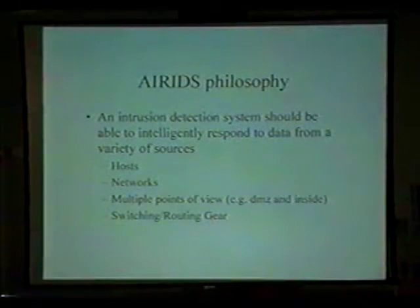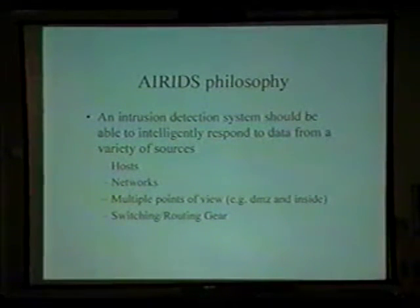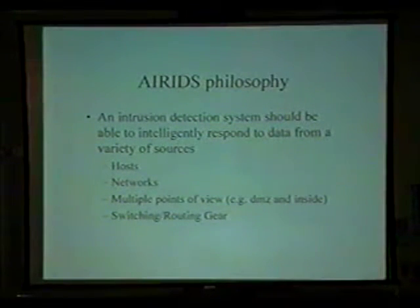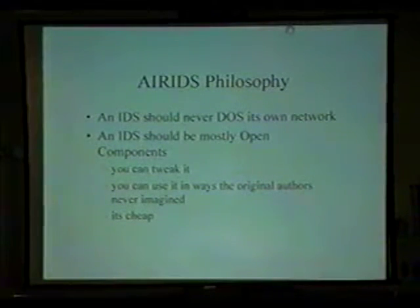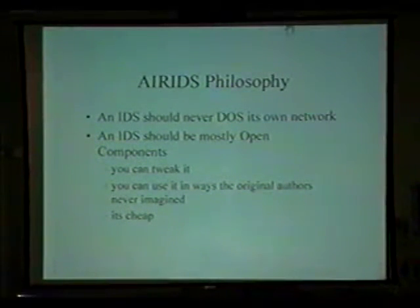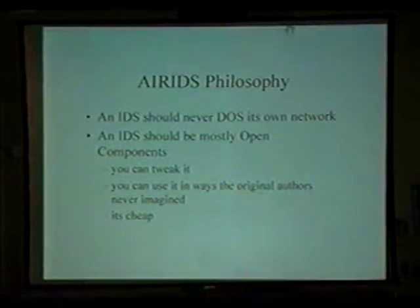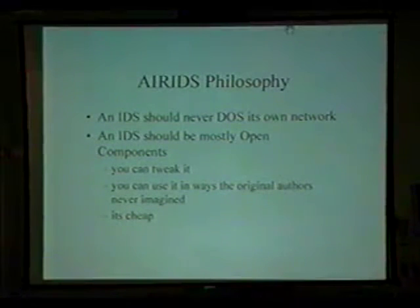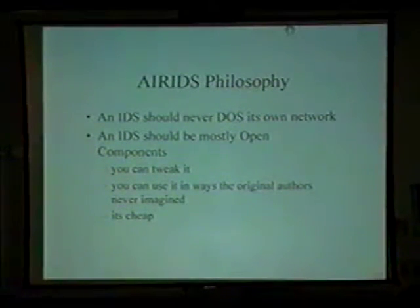Routing and switching gear — those are just some of the sources. Sources can even be routers, switches, firewalls, and all kinds of other data sources. Continuing on the philosophy: an AIR IDS should never denial of service its own network. Denial of servicing is a very bad thing, especially when you're doing it to yourself. An IDS should be mostly open components. I want it to be mostly open because that way people can work on it. The object of this project is to provide a community-based IDS that doesn't suck. You can tweak it because it's open source — you've got the source code, you've got the licensing. Documentation is another thing — I'm going to make sure the documentation is good, because I hate it when you download these things and it says compile it this way, and you do, and it doesn't work.